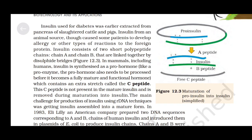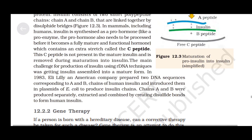In 1983, Eli Lilly, an American company, prepared two DNA sequences corresponding to chain A and chain B of human insulin and introduced them into plasmids of E. coli to produce insulin chains. Chain A and chain B were produced separately, extracted, and combined by creating disulfide bonds to form human insulin.